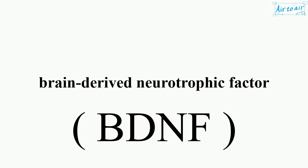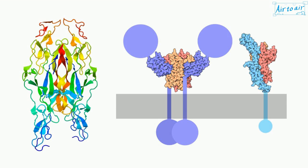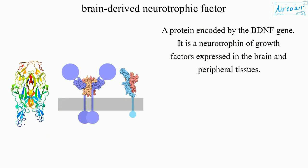Brain-Derived Neurotrophic Factor. A protein encoded by the BDNF gene. It is a neurotrophin of growth factors expressed in the brain and peripheral tissues.